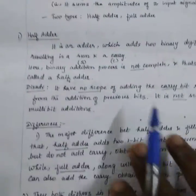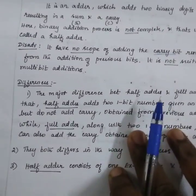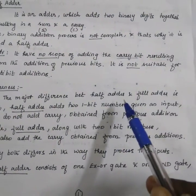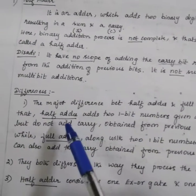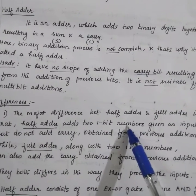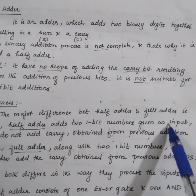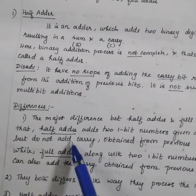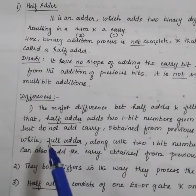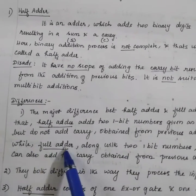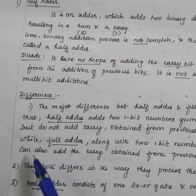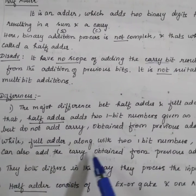Now let's see some difference between half adder and full adder. The major difference between half adder and full adder is that half adder adds two one-bit numbers given as input, but they do not add carry obtained from previous addition, whereas full adder, along with two one-bit numbers, can also add the carry obtained from the previous addition.